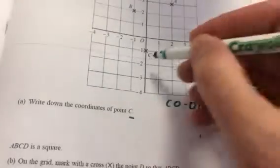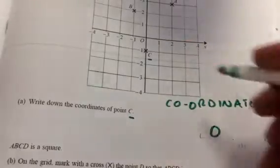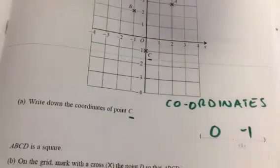It asks us to write down the coordinates of point C. C there, X value first, 0, and the Y value is minus 1.